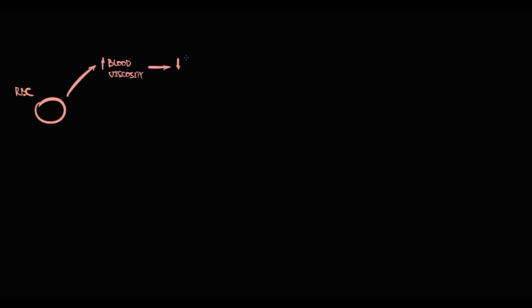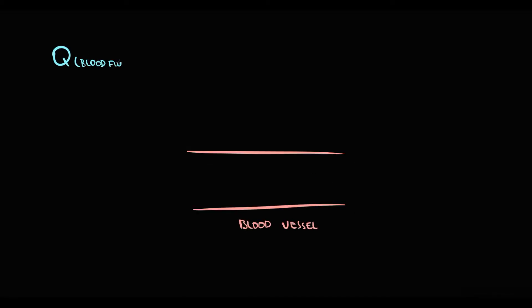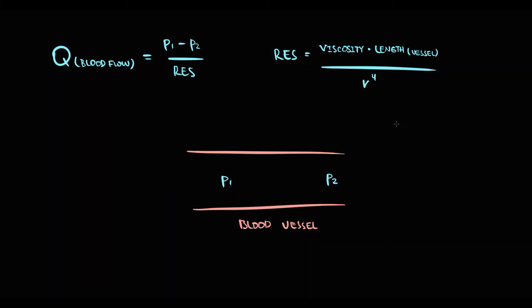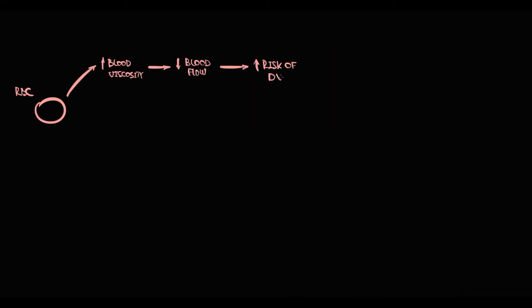Increase in blood viscosity causes decrease in blood flow through the entire cardiovascular system. Blood flow through a vessel equals the pressure difference between two points divided by resistance. Resistance is directly proportional to viscosity and length of the vessel, and inversely proportional to the radius. So with increasing viscosity, resistance to flow increases, and with increasing resistance, blood flow decreases.